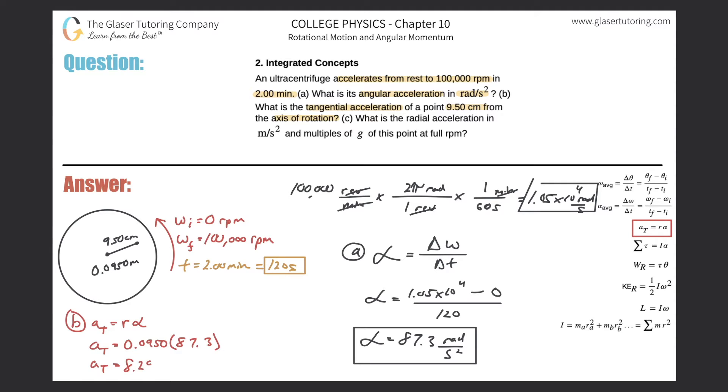So we get about 8.29. And that is meters per second squared. Remember, this is tangential acceleration, also known as linear acceleration, which means linear distance over time. So those are the units.